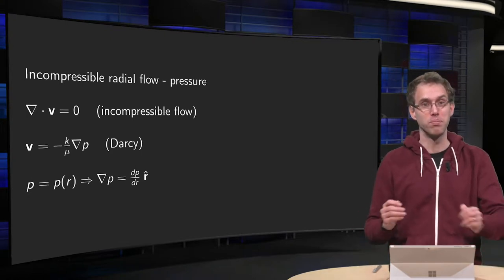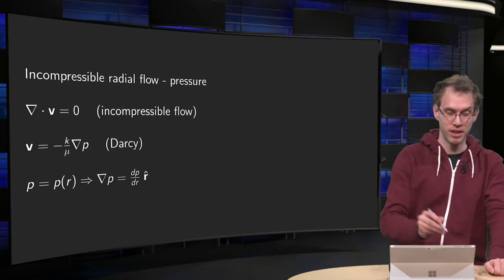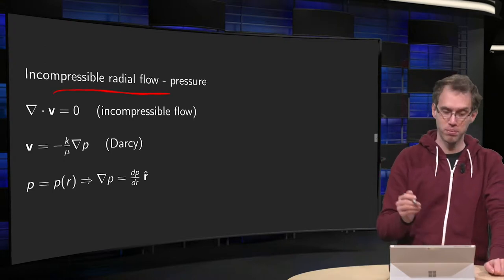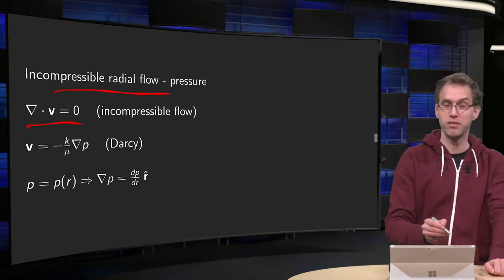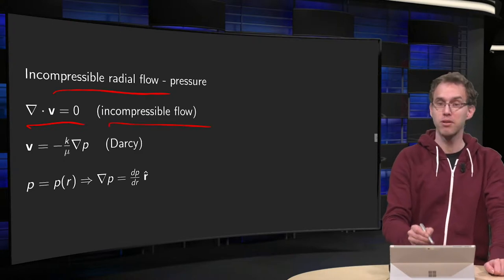So what's going on with the pressure? Let's take the easiest case: incompressible radial flow, again pressure. So divergence of v equals zero for the incompressible flow.